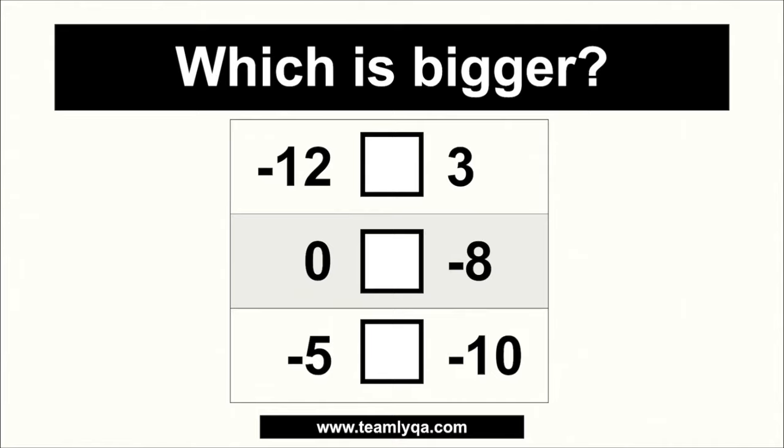Alright, so ano ang mas malaki? Negative 12 o 3? Now, ang idea is, when we're talking about comparing integers, kapag negative, lagi siyang mas mababa kesa sa positive. Bakit? Kasi ang utang ay mas mababa kaysa sa sweldo, kahit 3 lang siya. So you don't look at the number first. You look at the sign first. So dahil siya ay negative, automatic siya na yung mas maliit, siya ay less than 3.